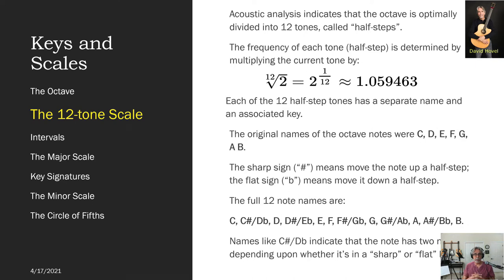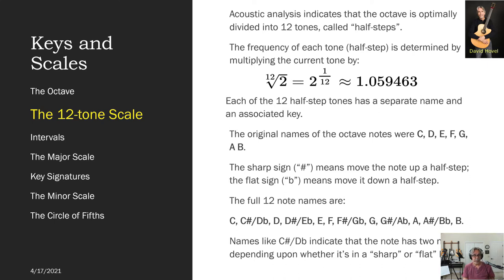Of these twelve note names: we have twelve notes, we need twelve names, but we only have eight. So the next half step above C we call C-sharp, or you can call it D-flat. The note above that is D, then D-sharp and E-flat, and so on. There are twelve individual notes and twelve individual keys, because the entire octave is divided into twelve parts. You can call a note like C-sharp or D-flat exactly the same. Typically, if it's in a key that has sharps you call it by the sharp name, and if it's in a key that has flats you call it by the flat name.